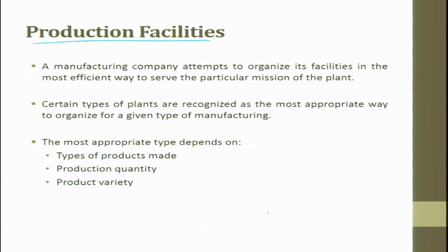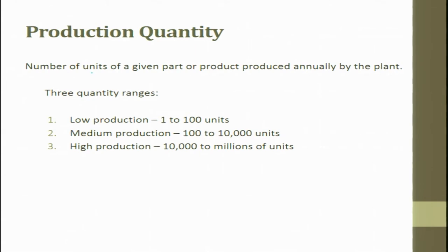When we talk about production facility, a manufacturing company attempts to organize its facilities in the most efficient way to serve the particular mission of the plant. The most appropriate type depends on the type of products to be made, production quantity, and product variety. Production quantity refers to the number of units of a given part produced annually: low production is 1–100 units, medium is 100–10,000, and high production is above 10,000 to a million.